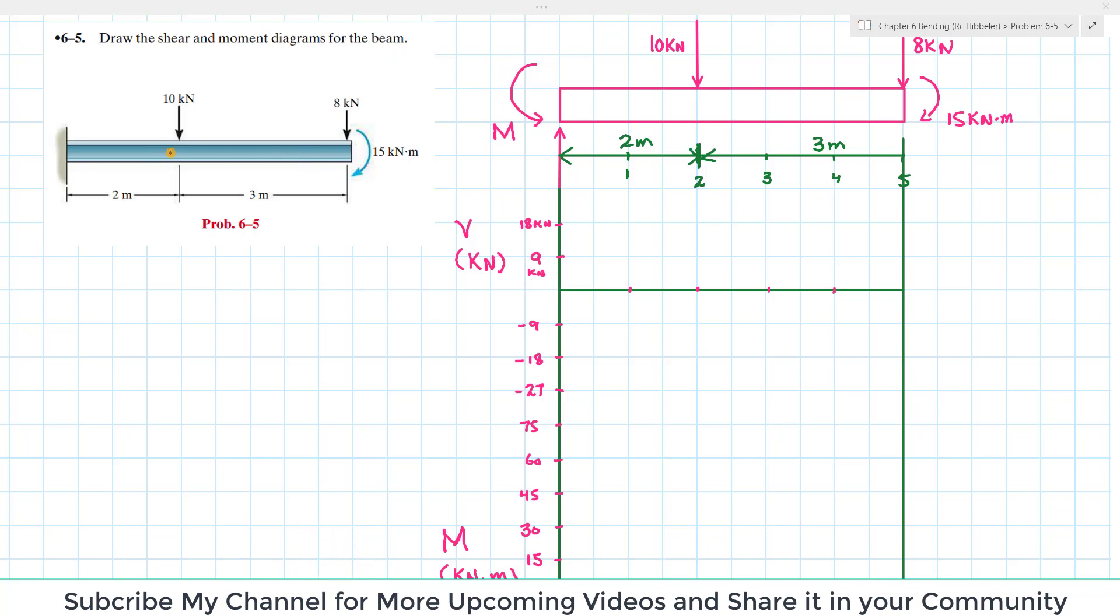This is a cantilever beam with the loading shown: 10 kN at a distance of 2 m from the fixed end and 8 kN at a distance of 5 m from the fixed end. There is a clockwise moment of 15 kN·m at this end. This is a fixed support, support A.